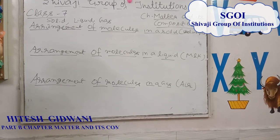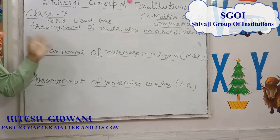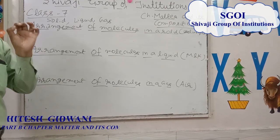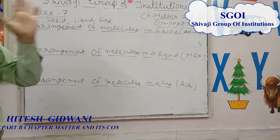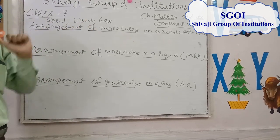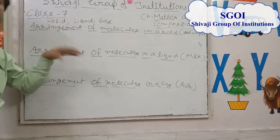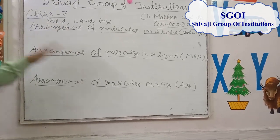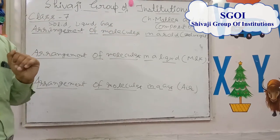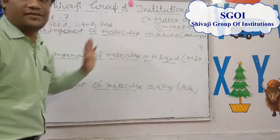Because the molecules attract each other with a strong force, the solids are rigid and hard. Because of all these properties, we can conclude that solids have a definite shape and definite volume. We have discussed the arrangement of molecules in the solid state.